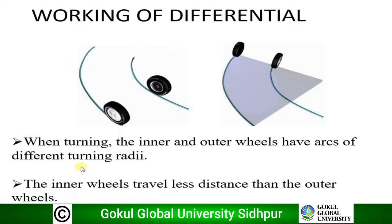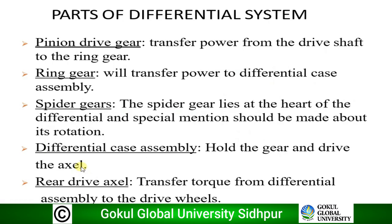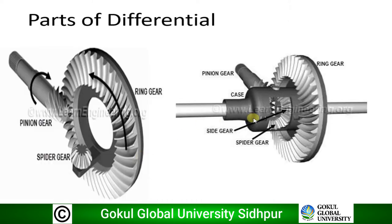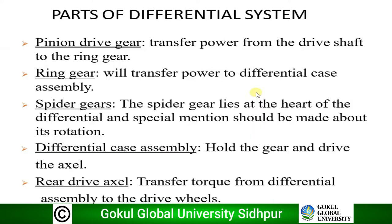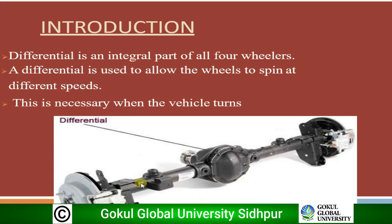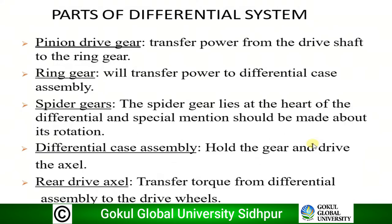The spider gear is the heart of the differential. It lies at the heart of the differential, and special mention should be made about its rotation. The spider gear is connected to the ring gear — when the ring gear rotates, the spider gear starts rotating. Next is the differential case assembly, which holds the gear and drives the axle. Finally, the rear drive axle transfers torque from the differential assembly to the driving wheels — this is the axle where the left and right wheels are mounted.